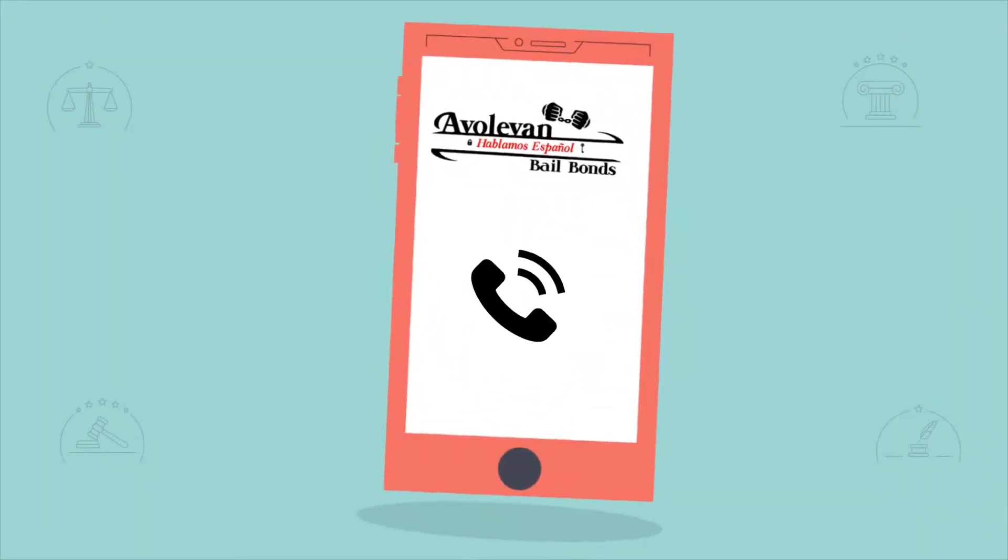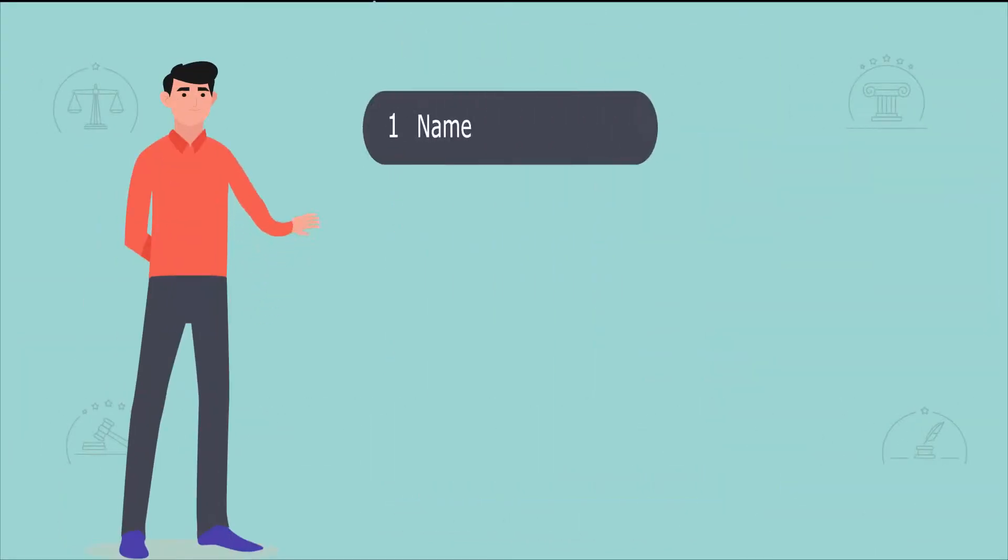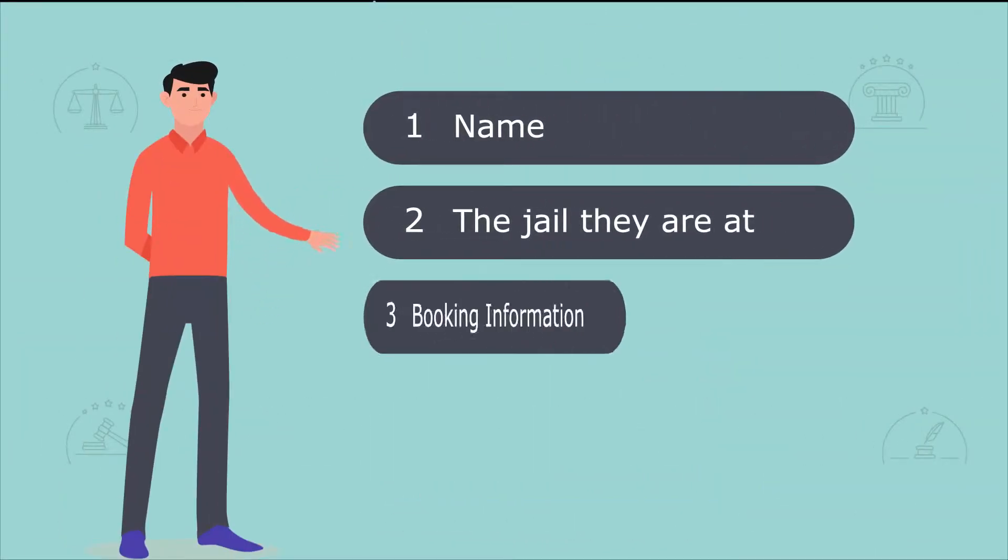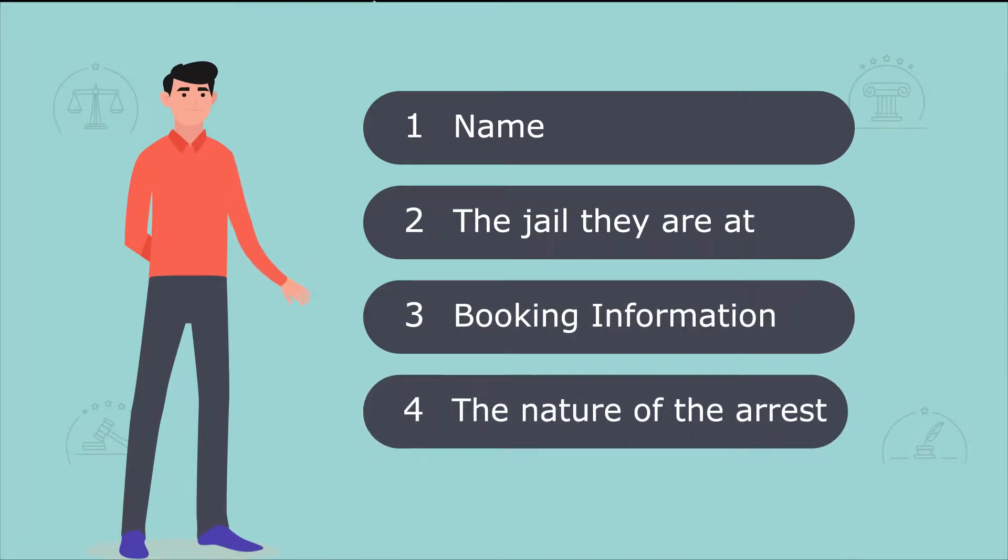When calling Avolivan Bail Bonds, try to have as much information as possible about the defendant, such as their name, the jail they are at, booking information, and the nature of the arrest.